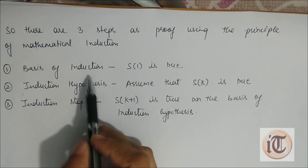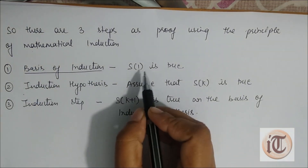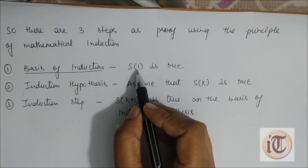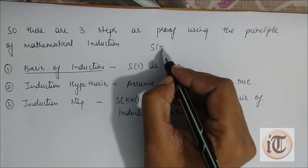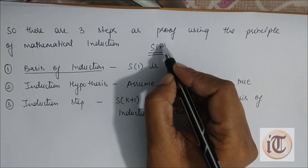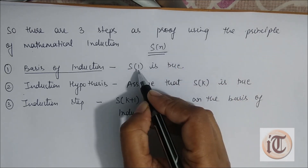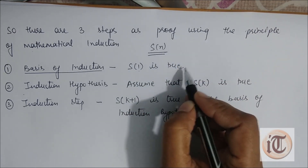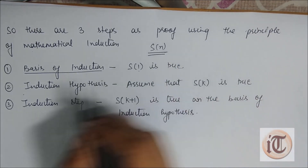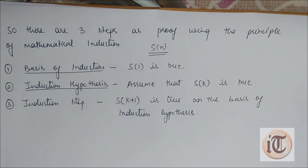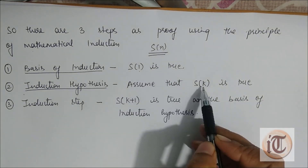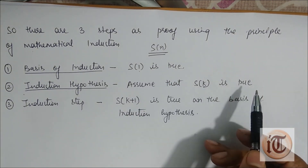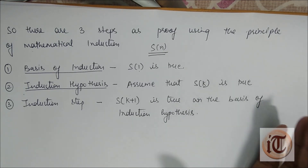The first is the basis of induction, in which we find out that S(1) is true. S(1) is true means we have a statement S(n) and in place of n we put 1, then find out whether S(1) is true or not. The second step is the induction hypothesis, in which we assume that S(k) is true — that means in place of n we put k and assume that statement is true.